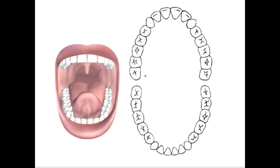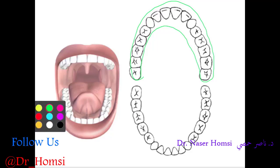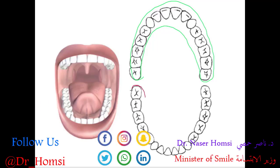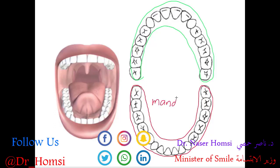The upper teeth are connected to the maxilla, or the upper jawbone, so we call this the maxillary arch. The lower teeth are connected to the lower jawbone, which is called the mandible, and so this collection of teeth is referred to as the mandibular arch.